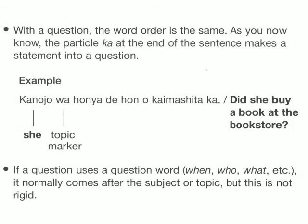With a question, the word order is the same. The particle ka at the end of the sentence makes a statement into a question. For example: Kanojo wa hon'ya de hon wo kaimashita ka? — Did she buy a book at the bookstore?